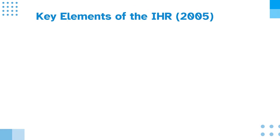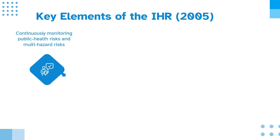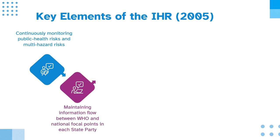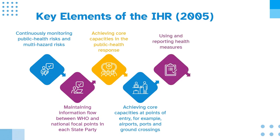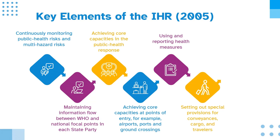Key elements of the IHR 2005 are: continuously monitoring public health risks and multi-hazard risks; maintaining information flow between WHO and national focal points in each state party; achieving core capacities in the public health response; achieving core capacities at points of entry, for example airports, ports and ground crossings; using and reporting health measures; setting out special provisions for conveyances, cargo and travellers; and protecting human rights.